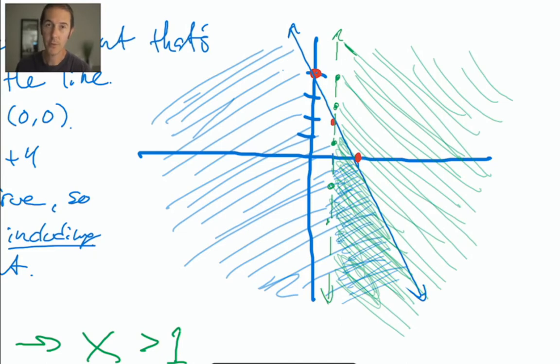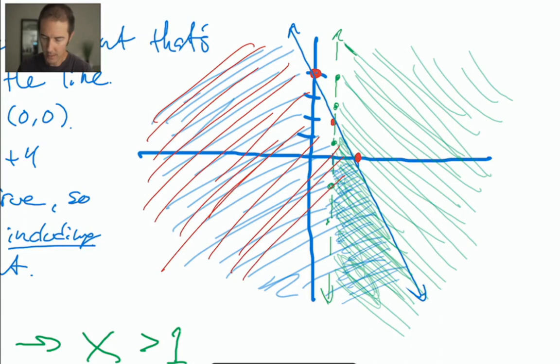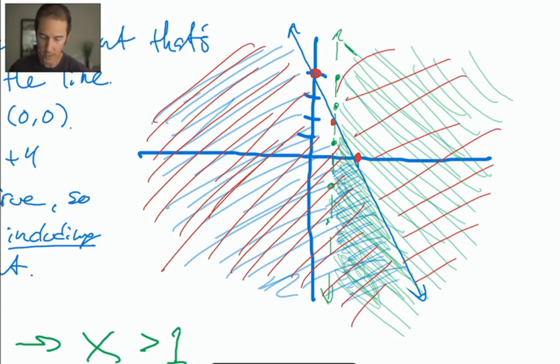Now then, something else that can go in your notes right after that would be a note that says, if the question had used the word or instead of the word and, then our answer would be all of the shaded regions. So the correct multiple choice graph would have all of this shaded and all of this shaded and all of this shaded. The only thing that wouldn't be shaded would be this upper middle wedge up here.